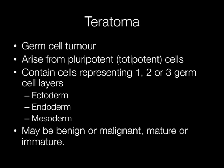Teratomas are germ cell tumours. They arise from cells that are pluripotent, or an alternative term is totipotent. This means simply that they can differentiate into a number of different tissue types. So teratomas contain cells representing one, or usually two or three germ cell layers. The three embryological germ cell layers are ectoderm, endoderm and mesoderm.